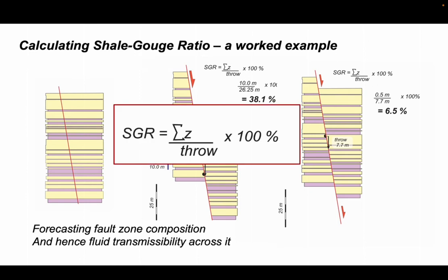This is the expression. The shale gouge ratio is equal to the sum of shale thicknesses divided by the throw, times 100 to get it into a percentage, and it applies to individual points along specific fault zones.